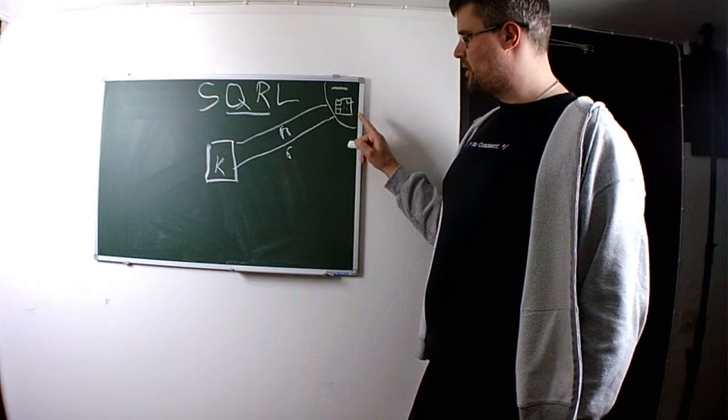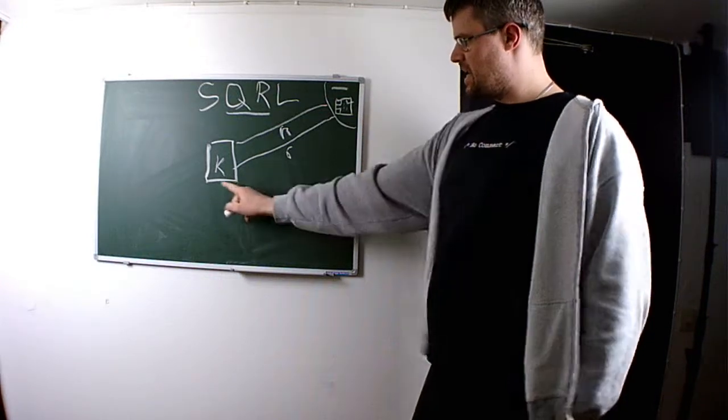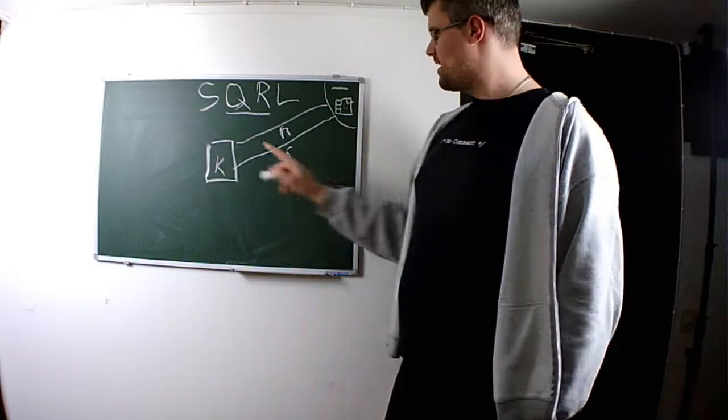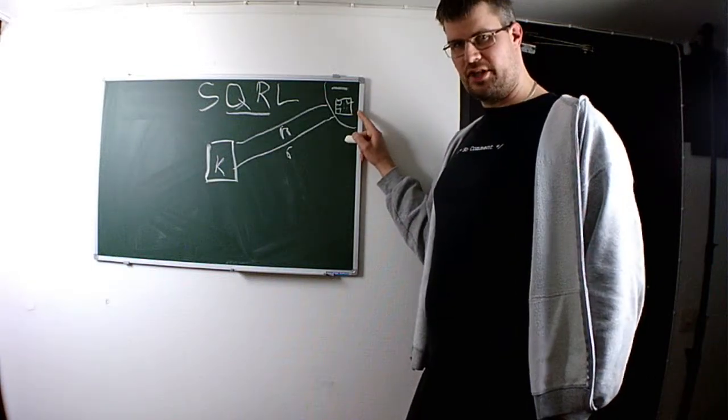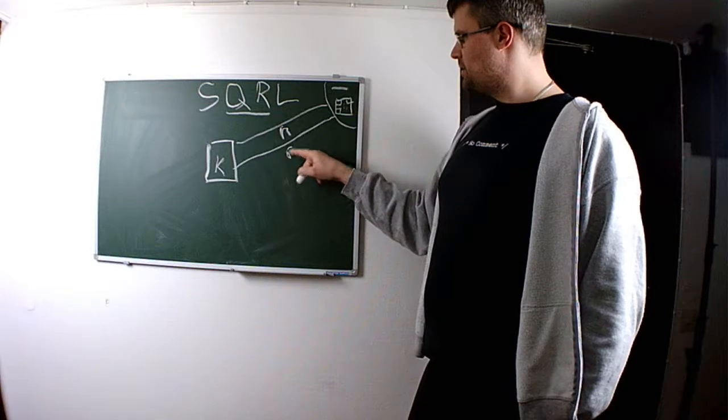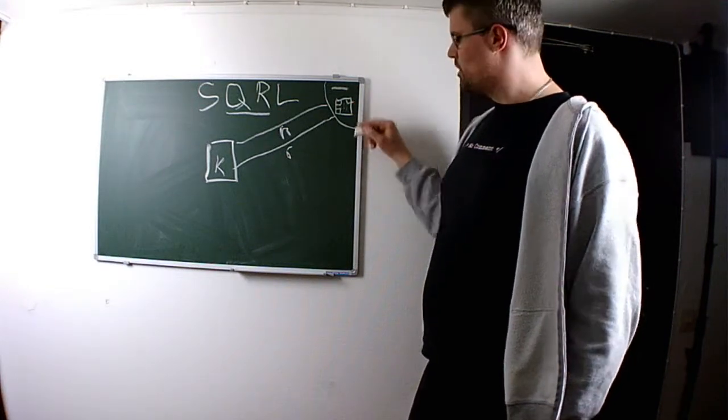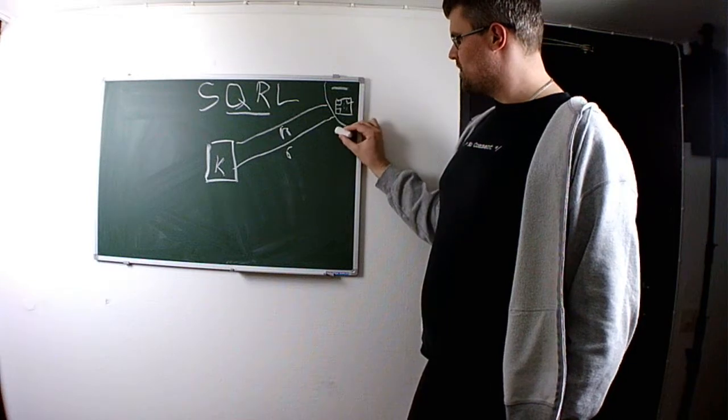So the server will know that one key, the public part of this key over here, has been seen before for this server. And when you get this response back for the scanning of this QR code, the server can actually log us in.